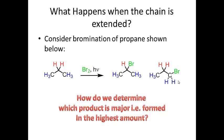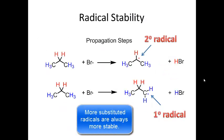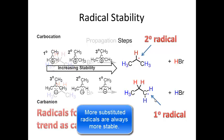Before we apply any formula, we can predict the major product based on the stability of the radical. In the propagation steps, bromine abstracts a hydrogen here creating a secondary radical, and bromine abstracts here creating a primary radical. The question is which of those two radicals is more stable — that's going to determine which one gets formed the fastest.